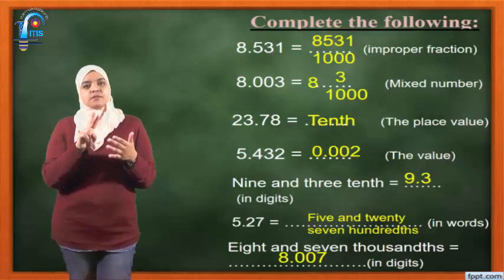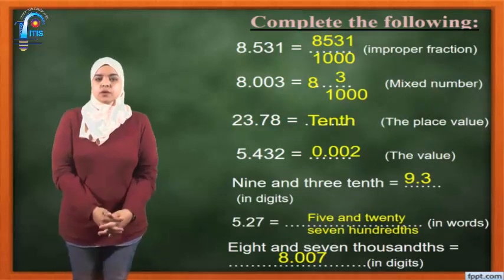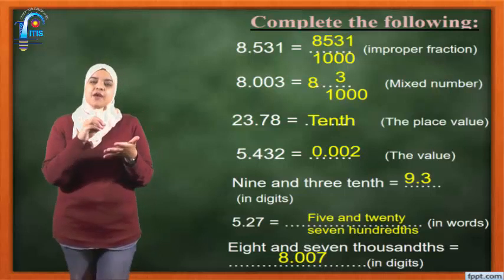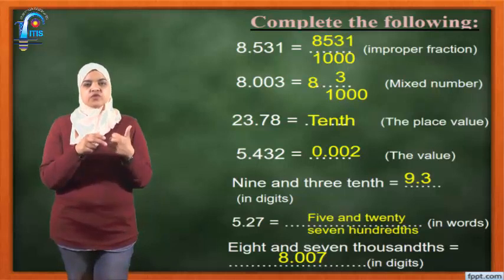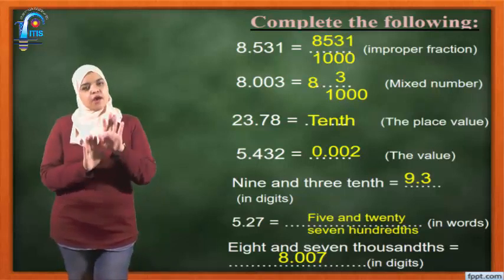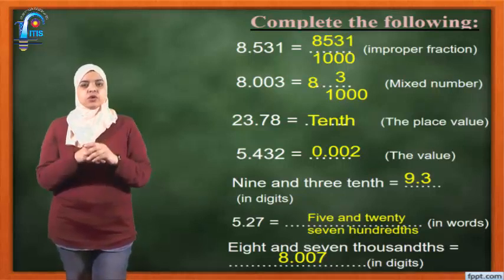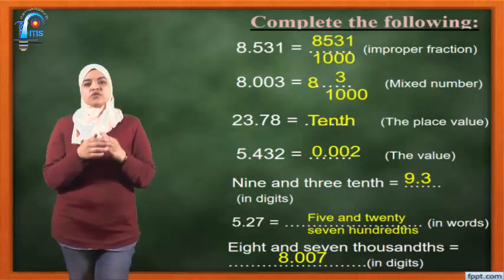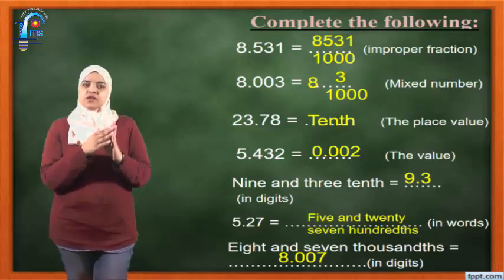Two numbers after the decimal? The denominator is 100. Three places? The denominator is 1000. Complete the following: 8.531 equals what? I want to convert from a decimal number into an improper fraction. I'm going to hide the decimal point, so the number will be 8531. I put it in the numerator. How many numbers after the decimal point? Three numbers. So in the denominator, I put 1000 with three zeros.